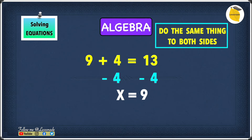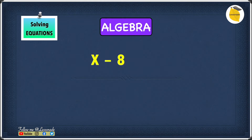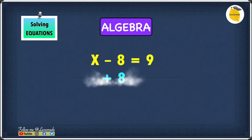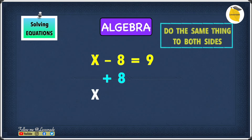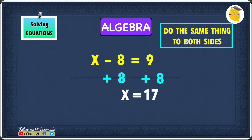Now let's look at another example: x minus 8 equals 9. We again need to get x on its own, so we need to undo this minus 8 by adding 8, because x minus 8 plus 8 leaves just x. Remember — do the same thing to both sides, so 9 plus 8 equals 17. Our answer is x equals 17. Checking by substitution: 17 minus 8 equals 9, which is correct, so x equals 17 is confirmed.